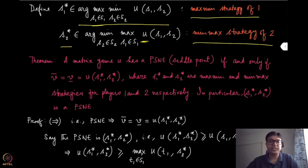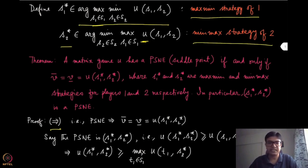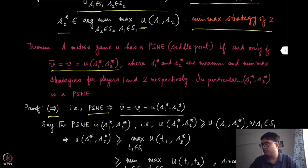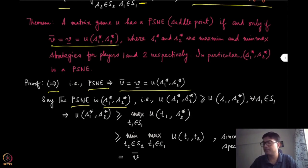To prove this necessary and sufficient condition we will do both directions one by one. First, the only-if direction: we start with a PSNE and show the condition holds. So we assume the game has a PSNE and show that the equality is true. Suppose this PSNE is S1 star, S2 star, using the same notation from previous modules.